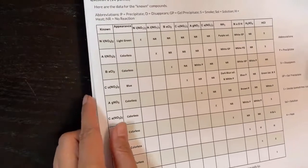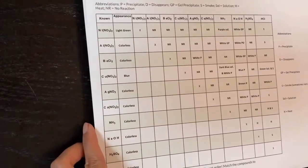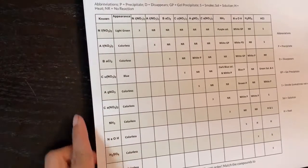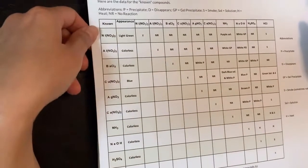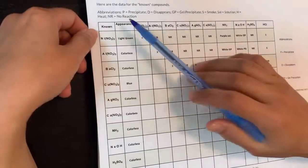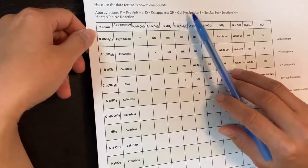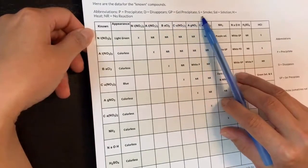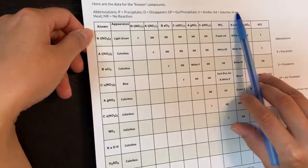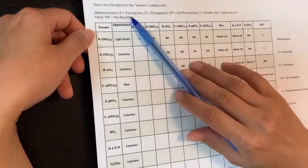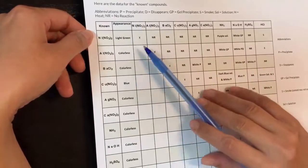The first table you're given is a known table with abbreviations: P is precipitate, D is disappears, GP is gel precipitate, S is smoke, SOL is solution, H is heat, and R is no reaction.